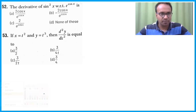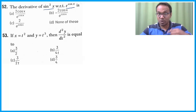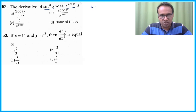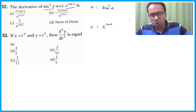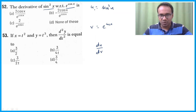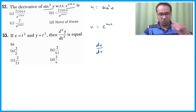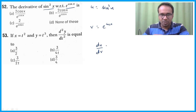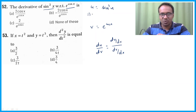Let's quickly go through them. The derivative of sin²x with respect to e^(cos x) — this is differentiation of a function with respect to another function. Let u = sin²x and v = e^(cos x). Both are composite functions. We need to find du/dv. In parametric form, du/dv = (du/dx) / (dv/dx).